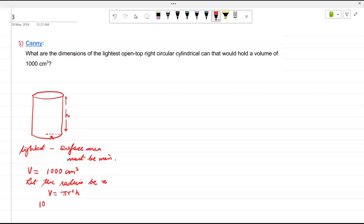Now volume is equal to pi r square h. Substitute. What is the volume? 1000 is equal to pi r square h. So what will h be? 1000 over pi r square.